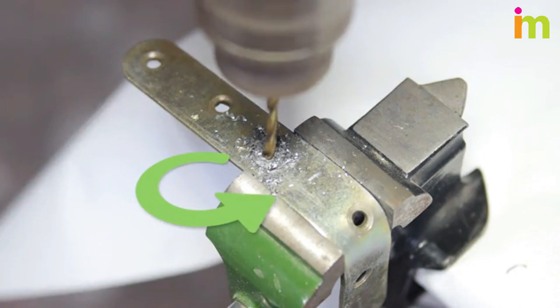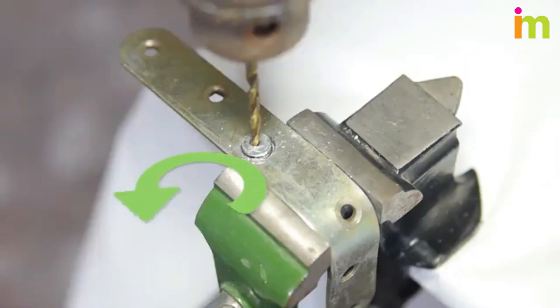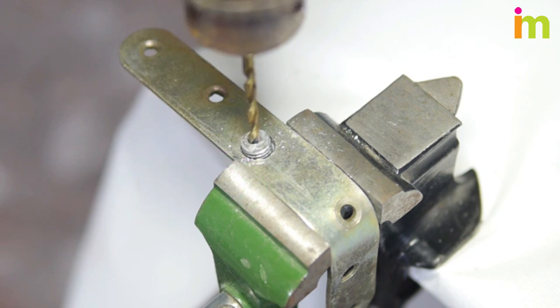Since the extractor is also a left-handed bit, it will also work into the broken bolt with a counterclockwise movement. As you continue to tighten in the extractor, the tapered end will catch, and the torque will work to loosen the bolt once the extracting bit is snug.